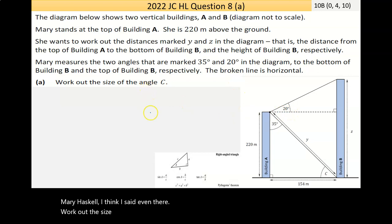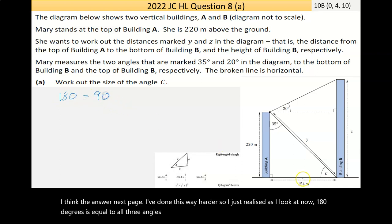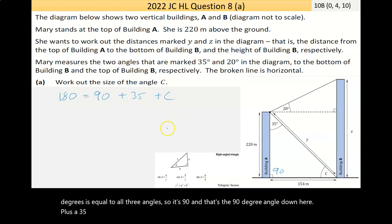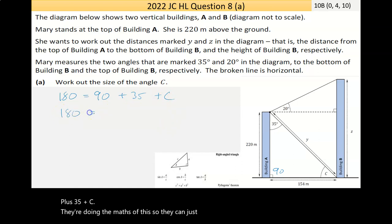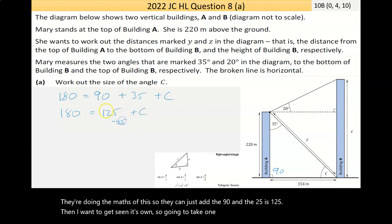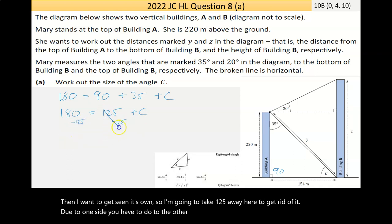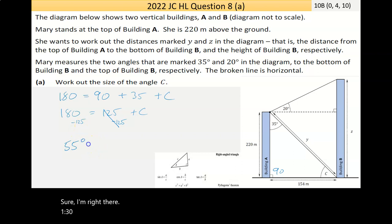Work out the size of angle C. Now, it is a 90 degree triangle here. Actually, that's pretty handy. I just realised as I look at now, 180 degrees is equal to all three angles. So, it's 90, and that's the 90 degree angle down here, plus 35, plus C. Doing the maths of this, they can just add the 90 and the 35 is 125. Then, I want to get C on its own, so I'm going to take 125 away here. Do it to one side, I have to do it to the other. They cancel, and I put 180, take away 125, is 55 degrees is equal to C.